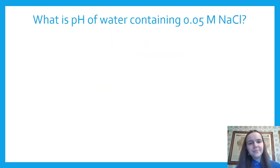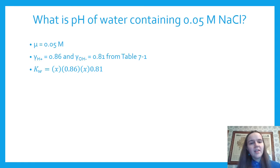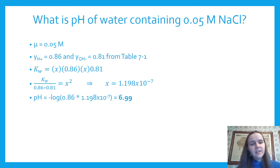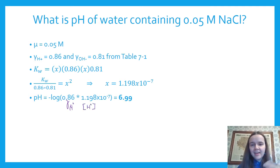Doing the example again with 0.05 M NaCl: find the ionic strength, go to the table, get the two activity coefficients, plug them into the Kw expression, and solve for x. We get x = 1.198 × 10⁻⁷ M. Then pH = −log(γH × [H⁺]) = 6.99. Again, adding the salt has made this a slightly more acidic solution.